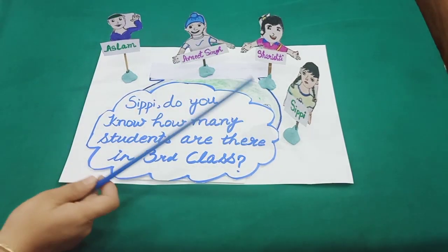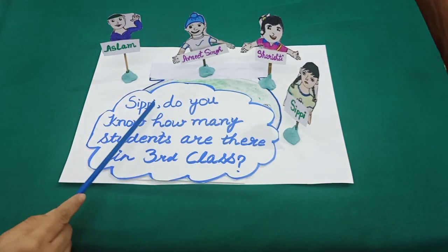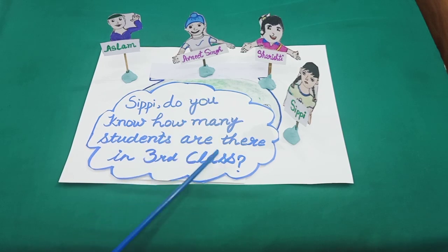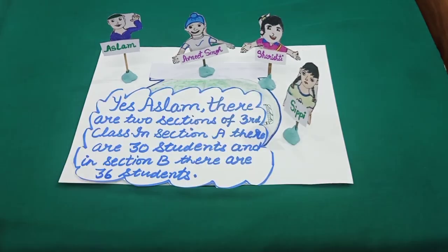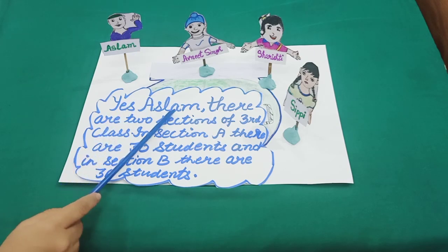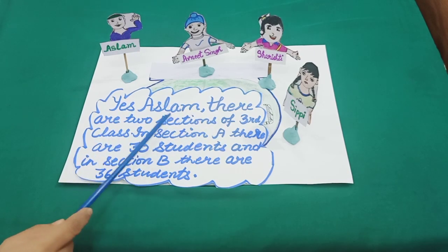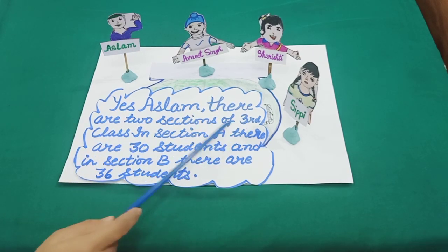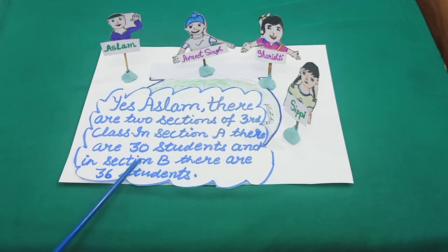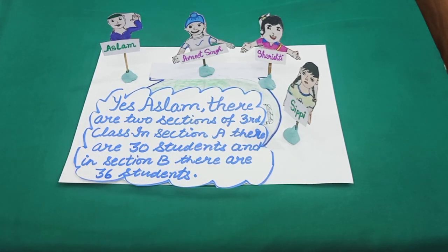Aslam asked Sippy, do you know how many students are there in third class? Sippy replied, yes Aslam, there are two sections of third class. In section A there are 30 students and in section B there are 36 students.